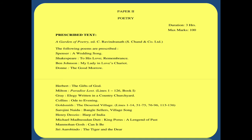In paper second, that is of poetry, you will get to study selected poems by some of the major English and Indian poets in English literature. The following poems are prescribed: A Wedding Song by Edmund Spencer; To His Love and Remembrance by William Shakespeare; My Lady in Love's Chariot by Ben Johnson; The Good Morrow by John Donne; The Gifts of God by George Herbert; the first 126 lines of Book One of John Milton's epic poem Paradise Lost; Elegy Written in a Country Churchyard by Thomas Gray; Ode to Evening by William Collins; and selected lines of Oliver Goldsmith's long poem The Deserted Village.